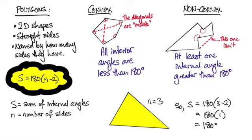So if I put that into my formula I get S equals 180 times 3 minus 2 which gives me 1. So my angle sum of the triangle, which is something you've probably heard or learnt in the earlier year at school, is 180 degrees.